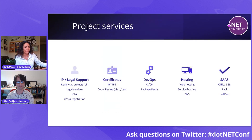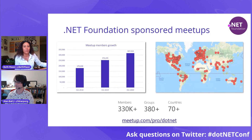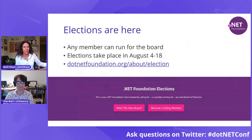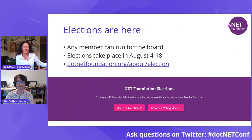The .NET Foundation offers project services so open source projects can just focus on writing code. They also support meetups — F# groups that are active can apply to be a member of their Meetup Pro program, meaning the Foundation pays all their meetup fees and connects them to a network of speakers. Board elections run August 4th through 18th and any member can run.